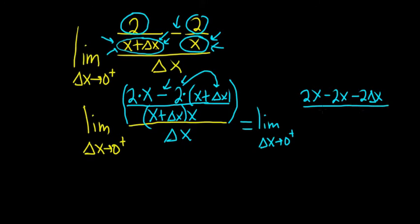It's all over x plus delta x times x, and it's all over delta x. And that top part again is in parentheses. The 2x's cancel.